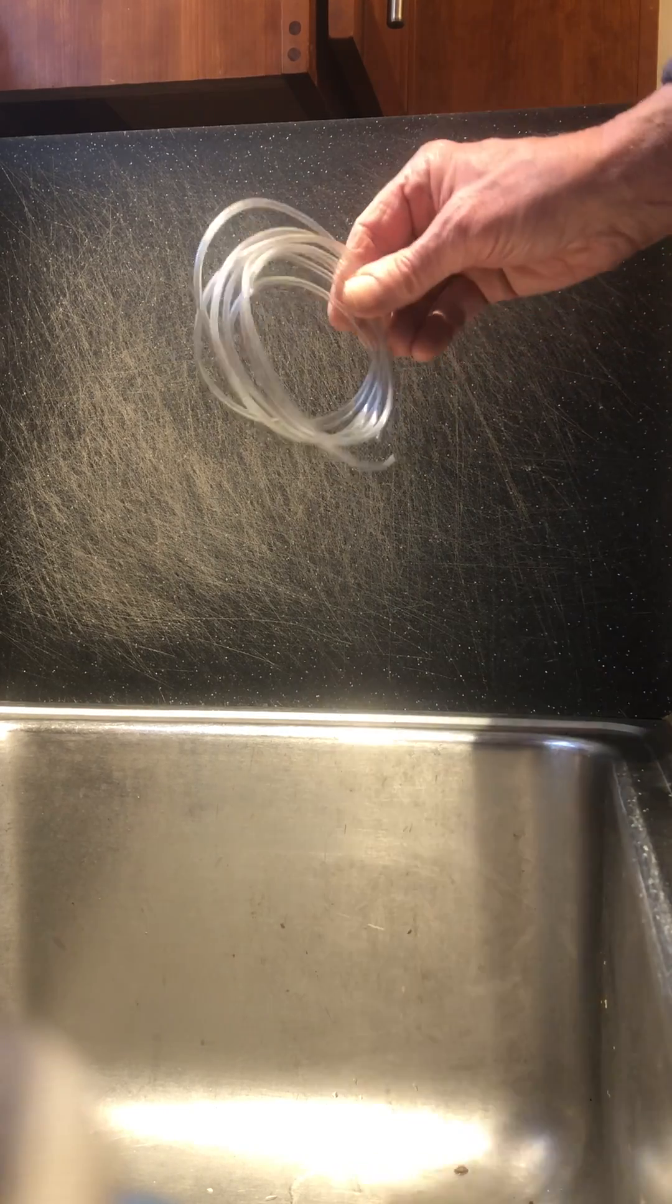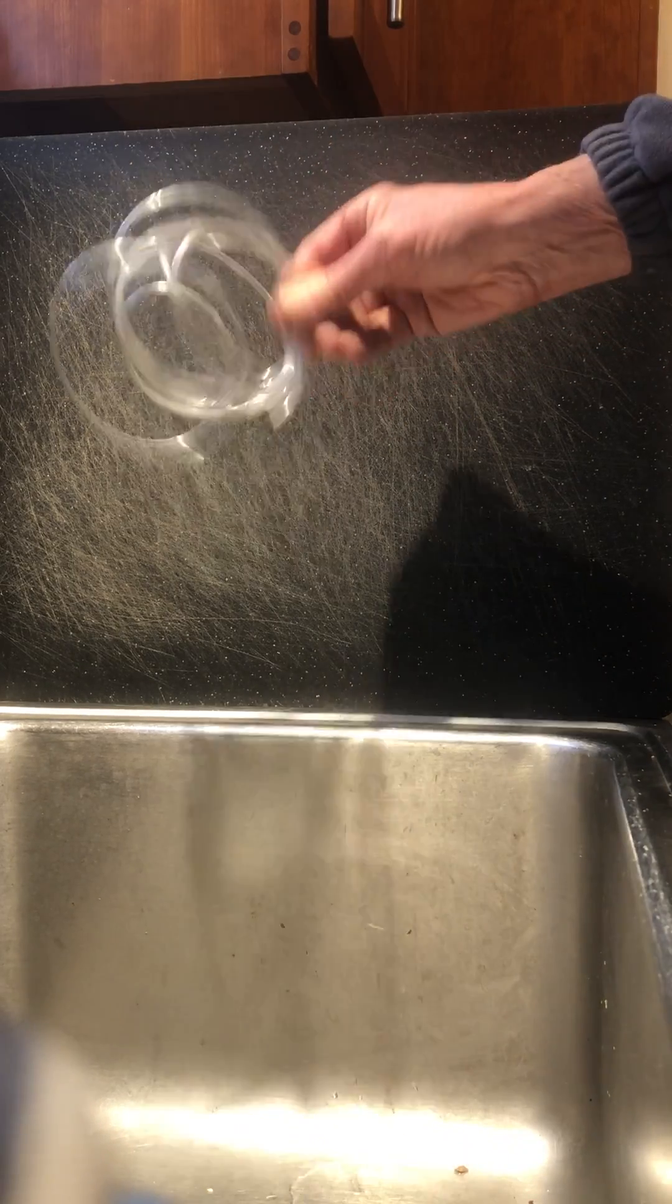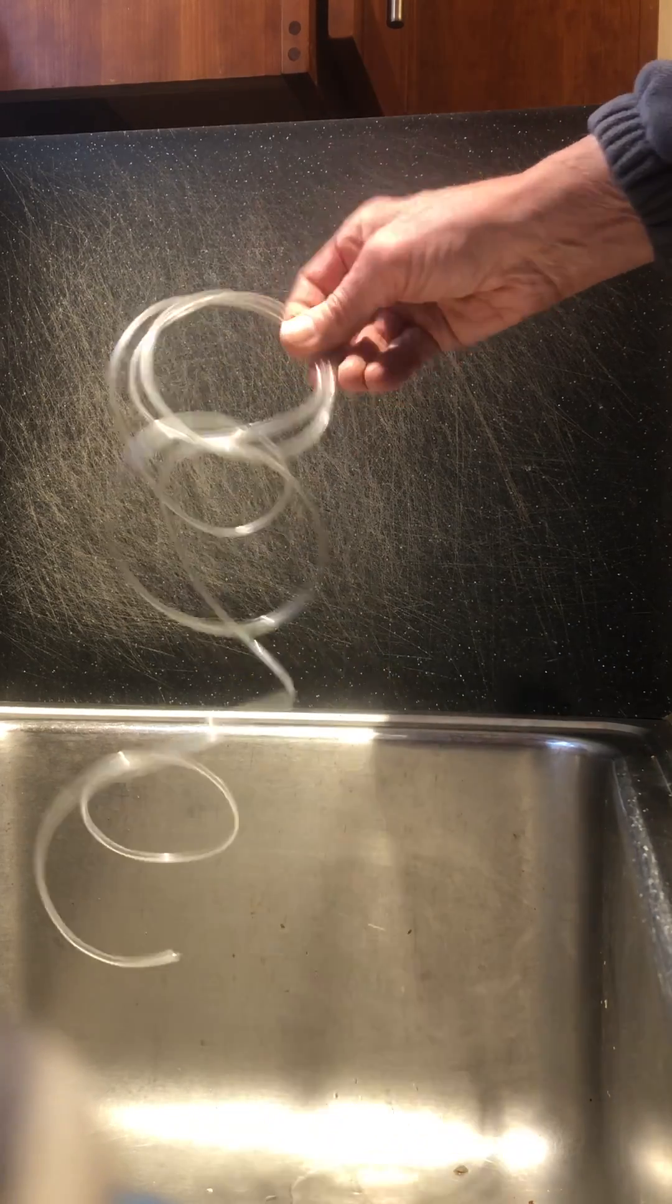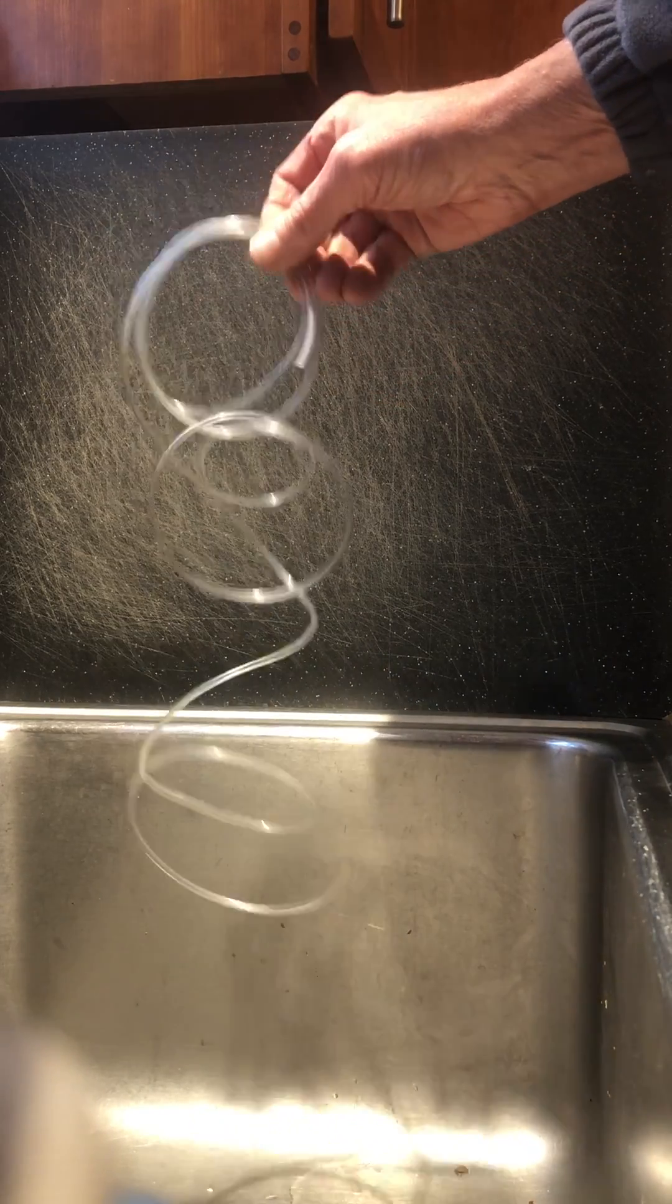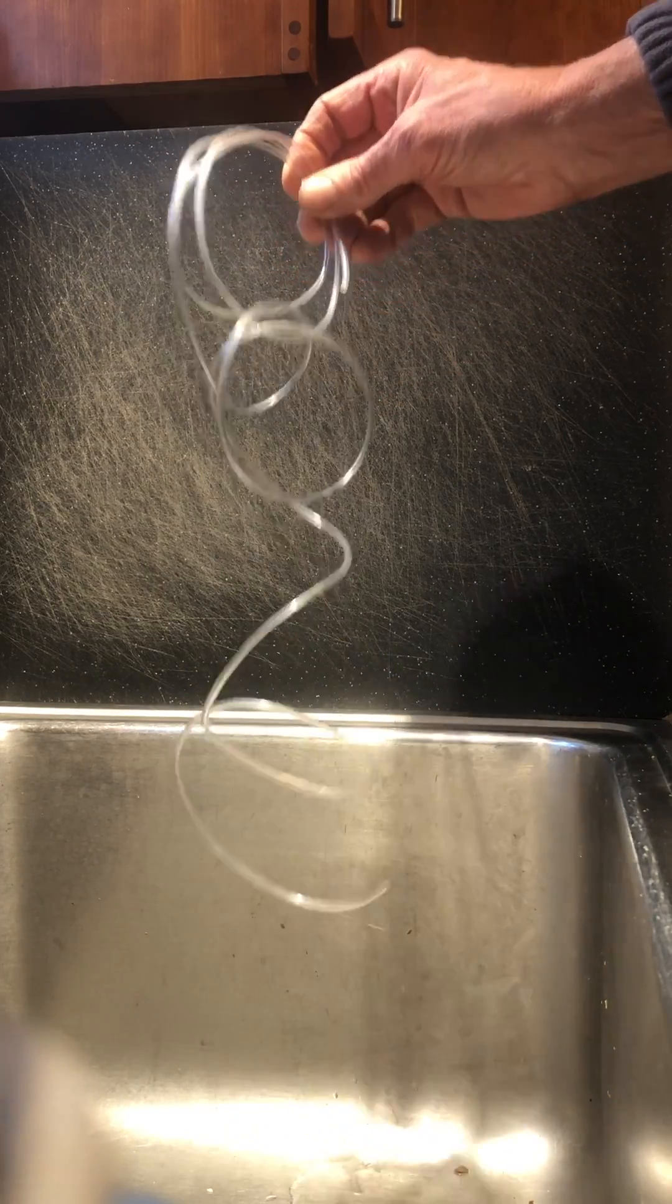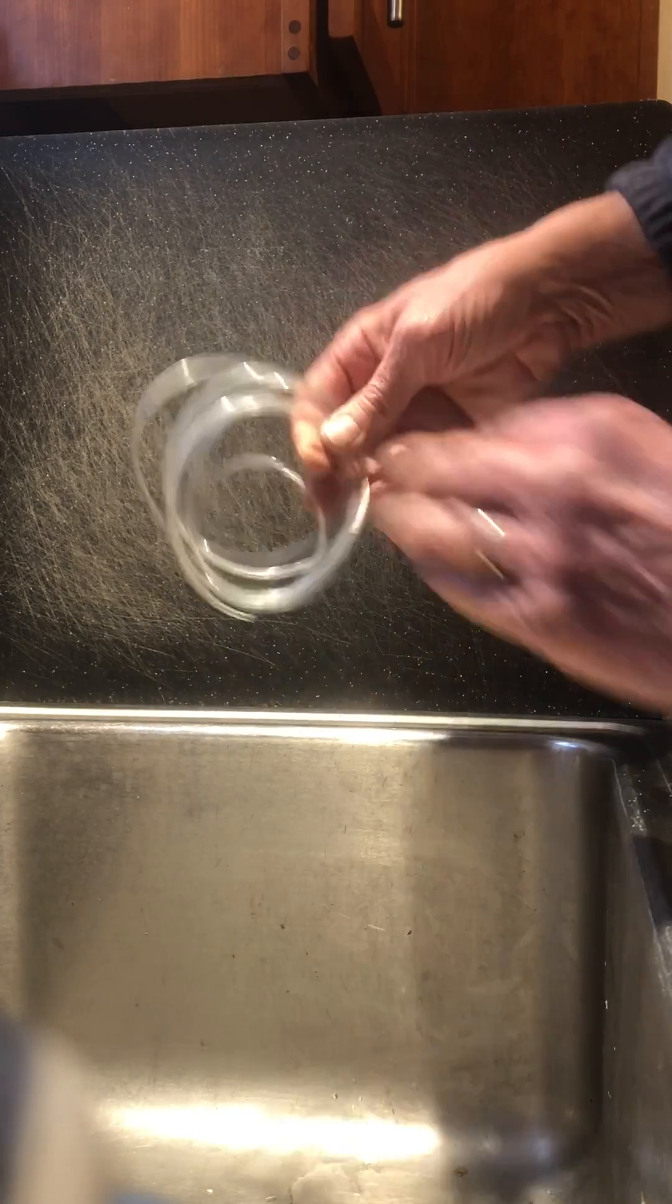Okay, so this is a little demo. This is plastic tubing, and as you can see it's quite flexible, and that's because even though it's made out of PVC, it has plasticizer embedded in it.